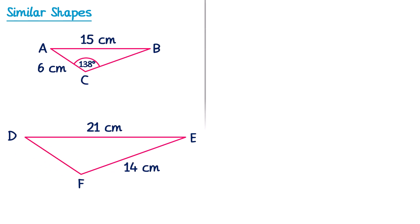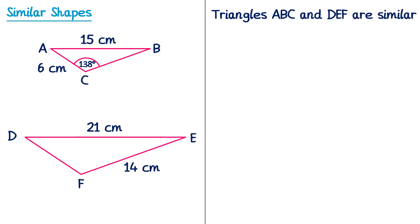Now let's look at what some exam questions look like. We're told that triangles ABC and DEF are similar. This means one of them is a scale factor enlargement of the other, and you can see that DEF is definitely bigger than ABC.